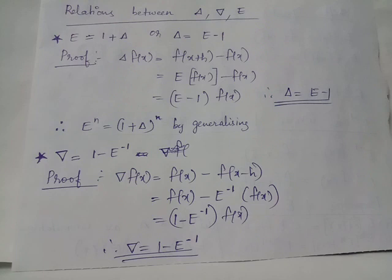You can write f of x minus h as e inverse applied on f of x, because the working of inverse shift operator is such that input position x is shifted to x minus h. Thus, we have e inverse of f of x equals f of x minus h.